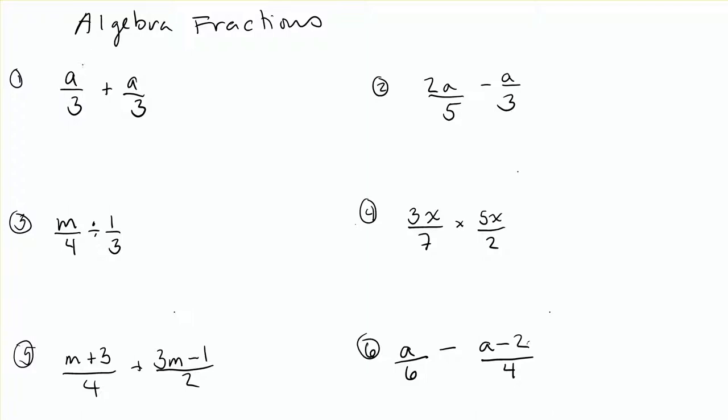So I notice here my first problem is a over 3 plus a over 3. The bases are the same as a fraction, so I can just add those directly together. Keep in mind your invisible ones. 1a plus 1a equals 2a on top, and the bottom stays the same. Exact same problem as if I had 1 third plus 1 third, would just be 2 thirds.